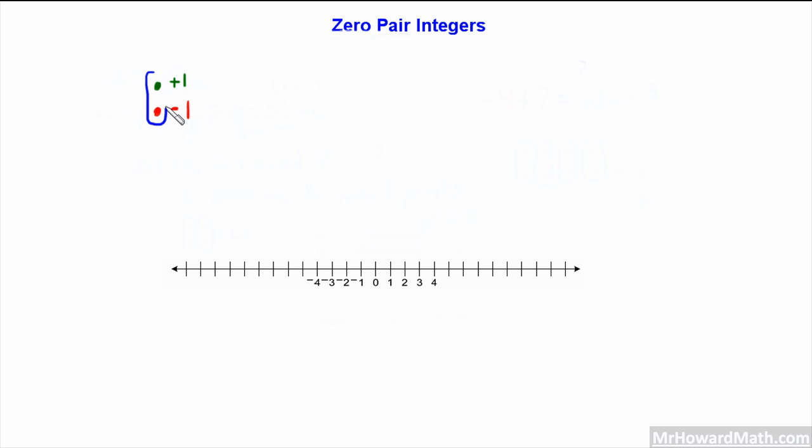It's called a zero pair because with the positive 1, we start at 0 and go 1 in the positive direction to the right. That is combined with a negative 1, so we're already at positive 1 and then we're going 1 in the negative direction back to 0. We're right where we started. We can also do it the other way. The order really doesn't matter. We could have our negative 1 first and our positive below. This is still a zero pair.